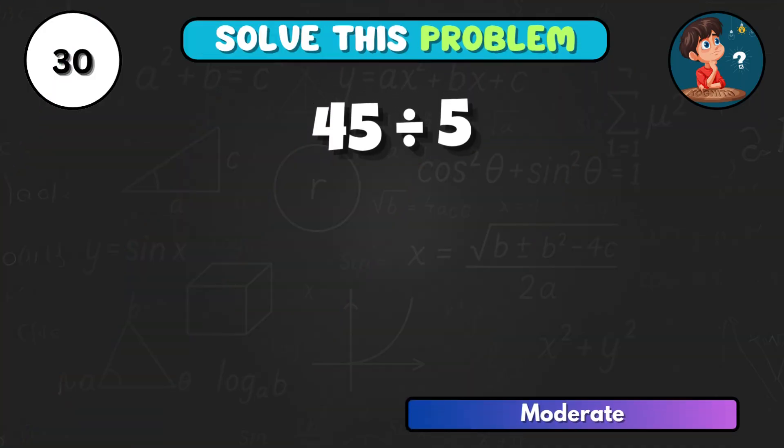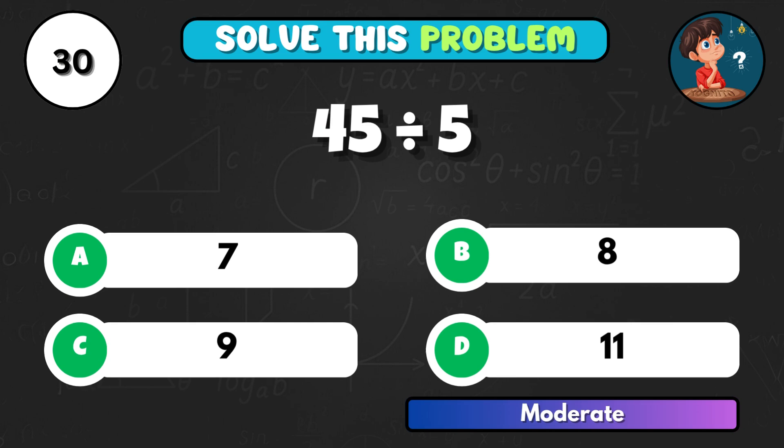45 divided by 5, what's the quotient? That's A. Correct answer C equals 9.